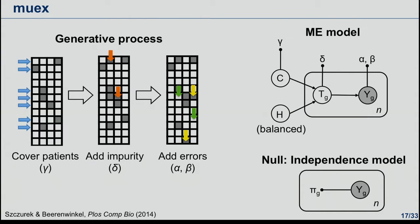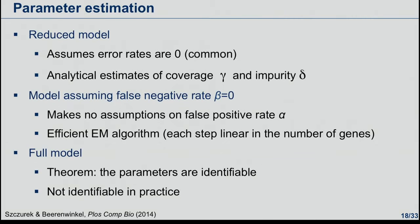That variable enforces balanced patterns — it strongly enforces that each gene can be the single mutually exclusive gene with equal probability. Significance in this model is computed by a likelihood ratio test where the null model assumes the genes are independent. We analyzed this model with increased complexity: we had an efficient algorithm for parameter estimation, and showed that in the full model the parameters are identifiable, but in practice you need essentially infinitely many samples to reliably estimate them.